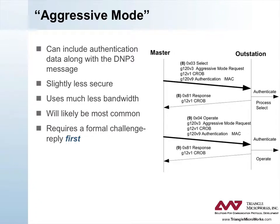Because the complete challenge-reply sequence adds several messages to a DNP3 transaction, the secure authentication specification permits devices to use an aggressive mode, in which the sender assumes the message will be challenged and transmits a MAC in the same message being authenticated. Here is an example of a select-operate sequence using aggressive mode. The master sends a message with a select function code and a CROB object as before, but precedes the CROB with an aggressive mode request object and follows it with a MAC object.